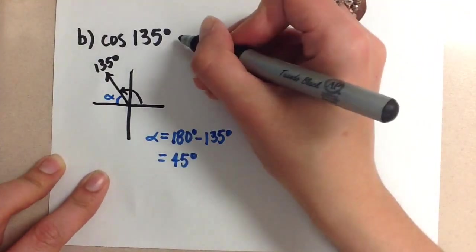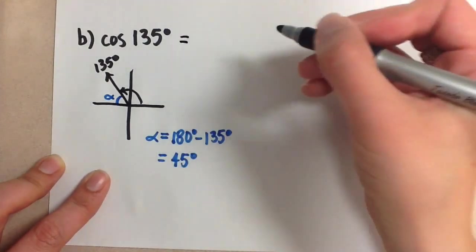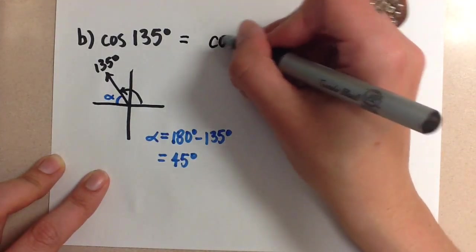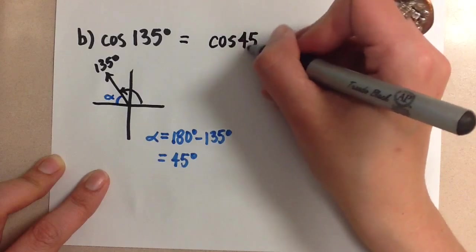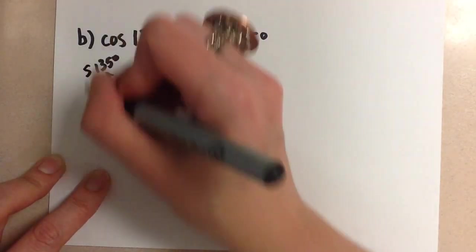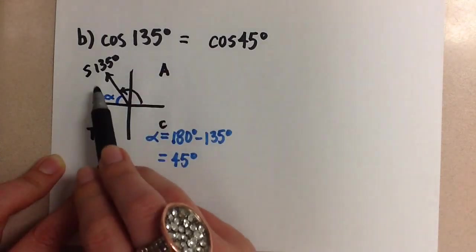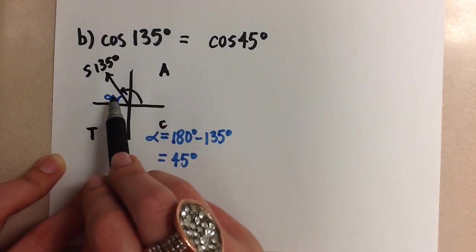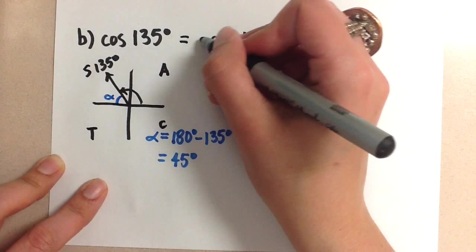So now we know then that cosine of 135 degrees is the same as cosine of 45 degrees. Go back to your CAST rule. In the second quadrant, sine is the only ratio that's positive, so cosine here is going to be negative.